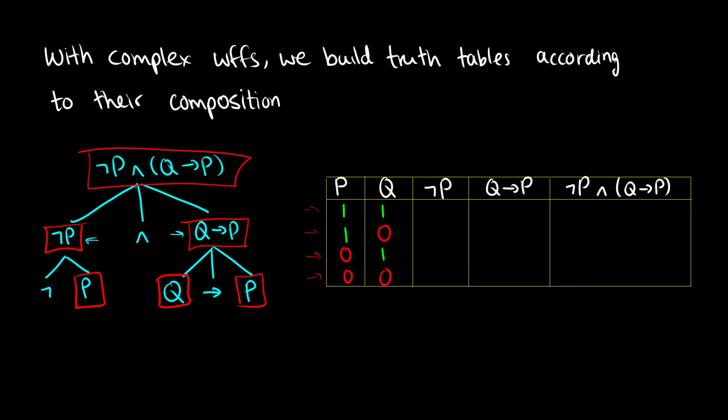The first column we have to find is not p, because we're taking p and adding the negation to it. Remember, p and not p just take the opposite value — whatever is true for p is false for not p and vice versa. So if p is true, not p is false. In the second row, p is true so not p is false. In the third row, p is false so not p is true. And in the fourth row, p is false so not p is true.